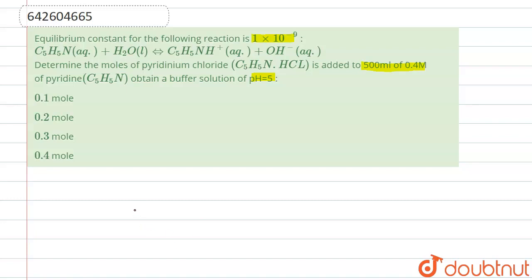So moving further, this is a buffer solution and pH is given as 5. As OH- ion is used in buffer, this is a basic buffer solution.